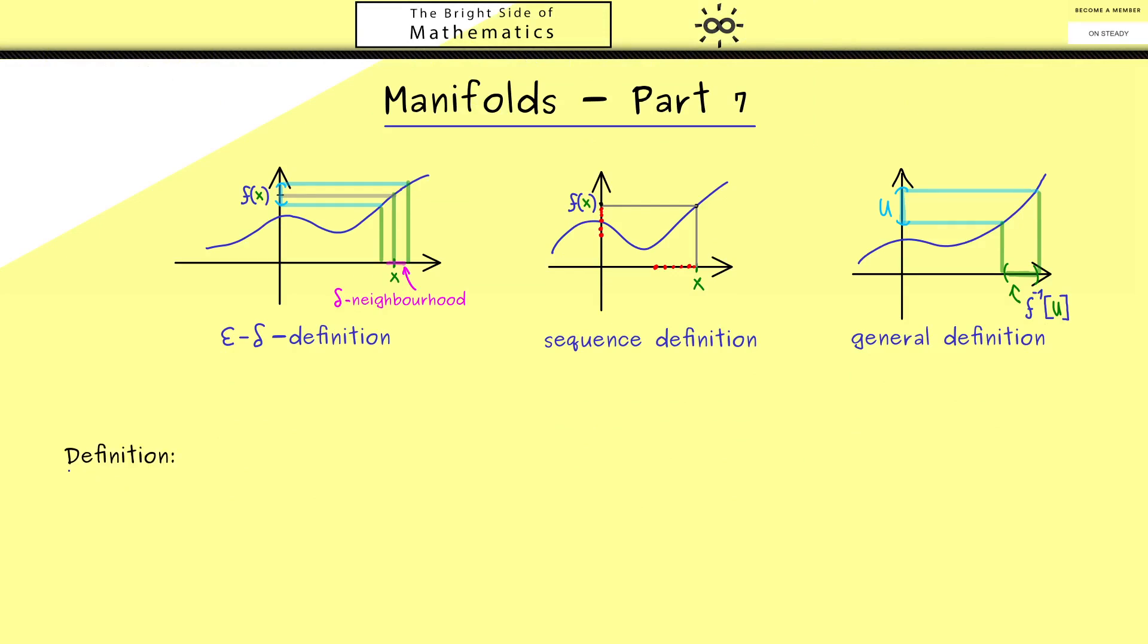Now the pictures from above with the graphs are not suitable anymore because we have two abstract topological spaces. Let's call the first one (X,Tx), so we have a set X together with a topology Tx. And the second one should be a set Y together with a topology Ty.